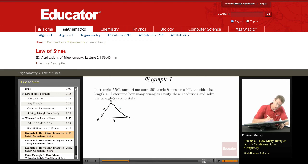And we're given that c has length 4. We're given that angle A measures 50 degrees and angle B measures 60 degrees. And so what we have here is we're given two angles and a side between them.